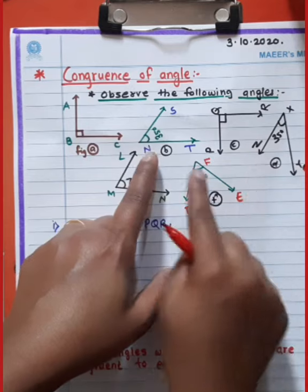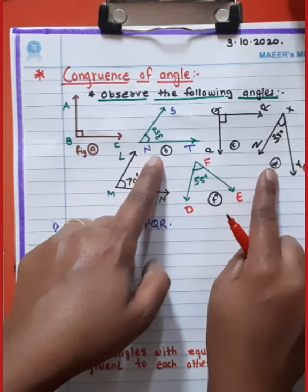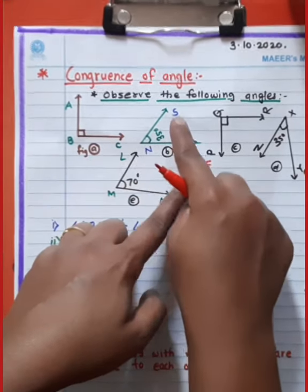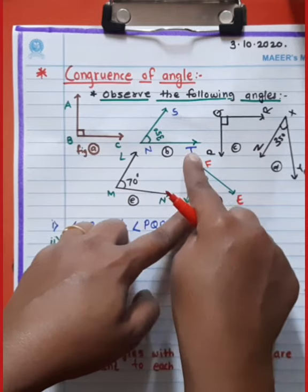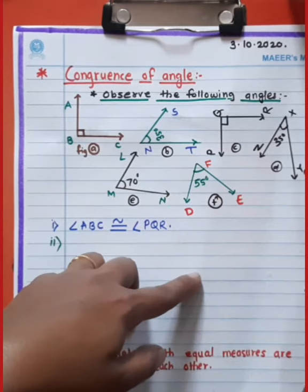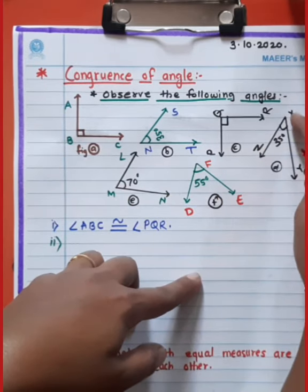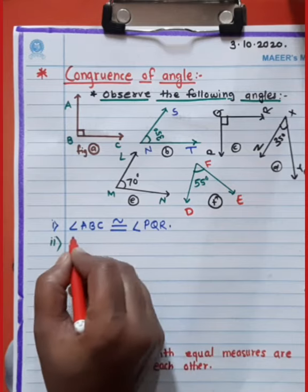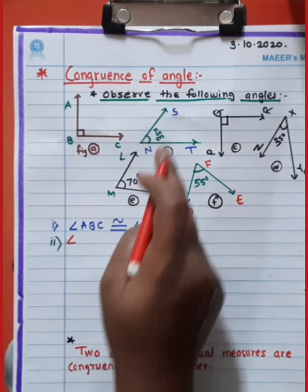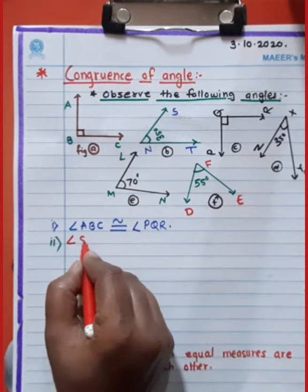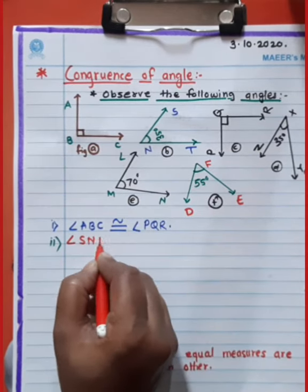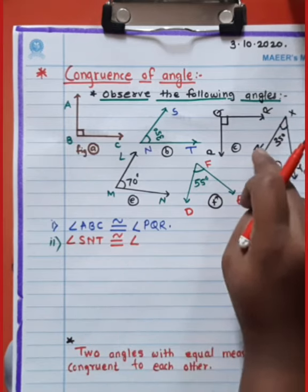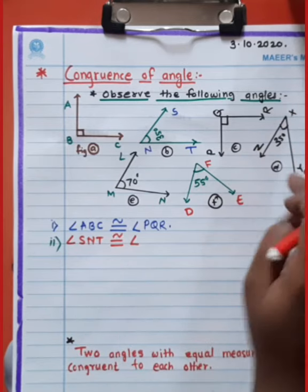Angle ZXY is also equal to 35 degrees. Both angles have the same measurement — 35 degrees. It means that these two angles are congruent to each other. So we write: angle S and T congruent angle ZXY.